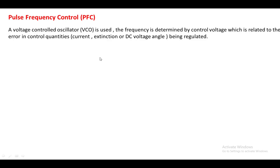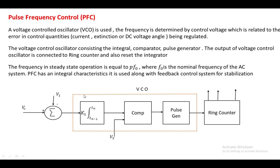In pulse frequency control, an oscillator is used consisting of an integrator, comparator, and pulse generator. The control voltage Vc is derived based upon the current, extinction angle, and DC voltage angle. It only determines the frequency of the pulses. The output of the voltage-controlled oscillator feeds a ringing circuit which generates pulses to the valve and also resets the integrator. Pulse frequency control has an integral characteristic and is used along with a feedback control system for stabilization.